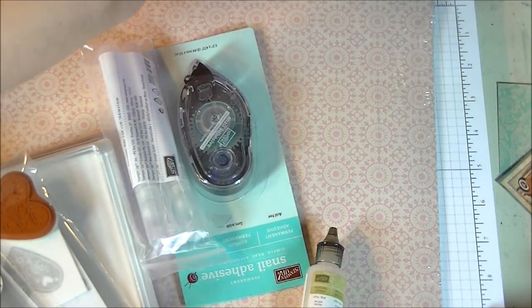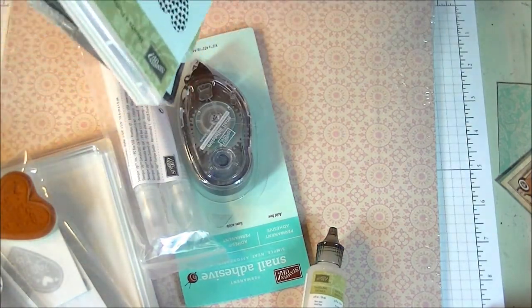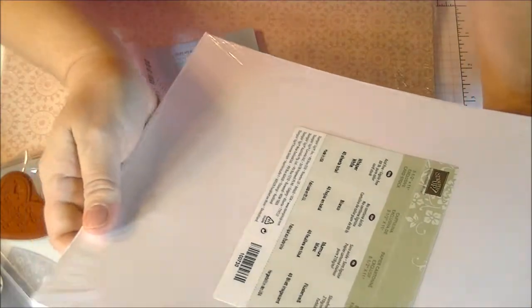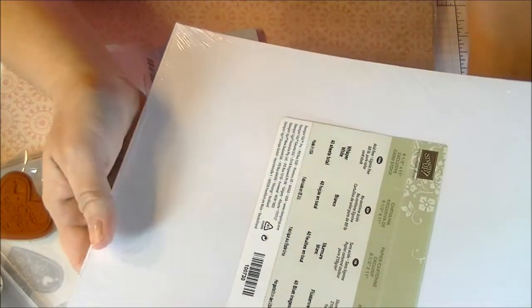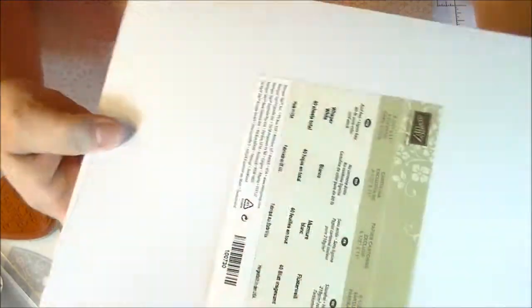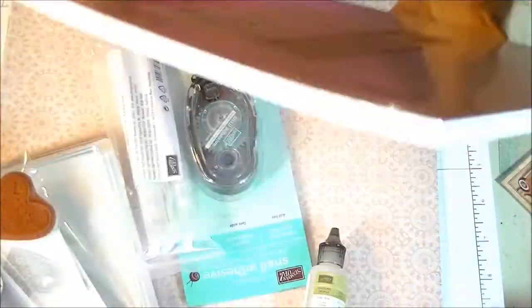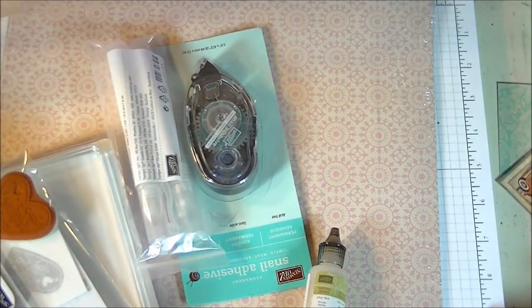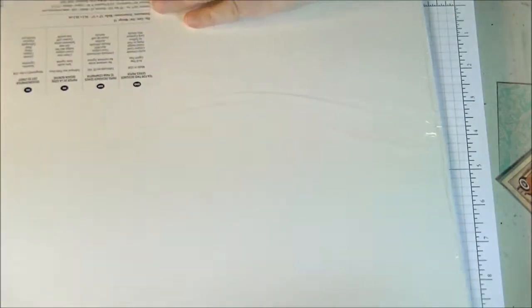I got some paper and I already have a bunch of their paper too. So I just got the eight and a half by eleven white cardstock and you get 40 sheets of this whisper white color. And then I didn't show my other paper yet.